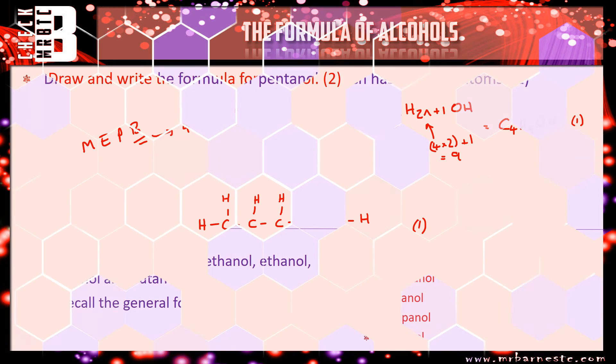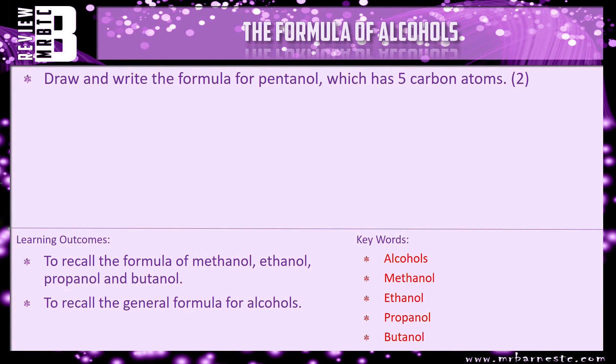Now, although for the exam you're only asked to draw the first four, I'm asking you to draw the one with five carbon atoms—it's exactly the same. Draw and write the formula for pentanol, which has five carbon atoms. It's worth two marks, exactly the same question as the first. You just have your n as five.